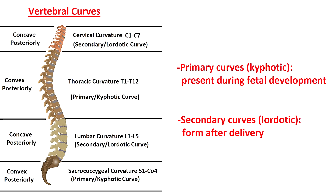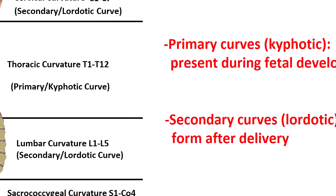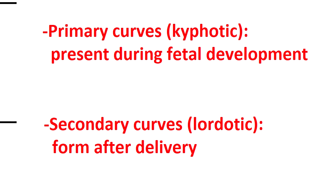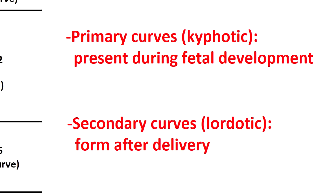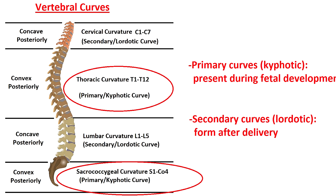Looking at the vertebral column from the side, you'll notice it has an S-curved shape with four curvatures. Two are called primary curvatures and two are called secondary curvatures. The primary curvatures, also called kyphotic curves, were present during fetal development. These curves are convex — curving outwardly toward the back of the body — and they include the thoracic curvature (T1 through T12) and the sacro-coccygeal curvature, which includes the sacrum and coccyx.